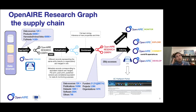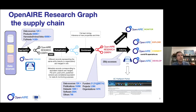Then we can enrich the graph thanks to mining. This is one of the interesting parts, because the mining can actually collect links from publications to software that have never been revealed in the metadata or specified by the original authors — we dig into GitHub, for example. But also links to projects and to funders. We have 31 funders in beta, 21 in production, and around 3.5 million projects. For each of them, we mine into the publications trying to find the links between them.